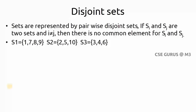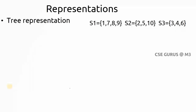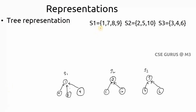Now, how can you represent these sets? There are three main representations. The first one is tree representation. If you have three sets, you represent each set as a tree: among the elements in a set, you take any one element as the root node and the remaining elements become children. The arrow should point upwards. For S1, I have taken 1 as the root node; for S2, 2 as the root node with elements 5 and 10 as children. This is called tree representation.